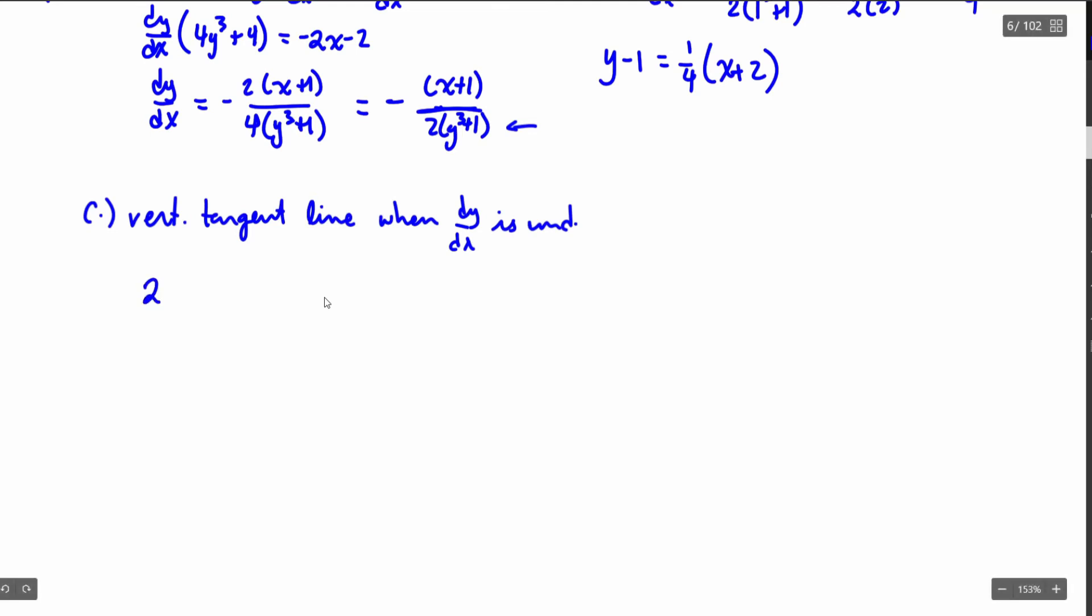So I'm going to get 2 y cubed plus 1 equals 0. So that's going to get me y cubed plus 1 equals 0, because I just divide by 2. Y cubed equals negative 1 and then the cube root, so y is going to be equal to negative 1.